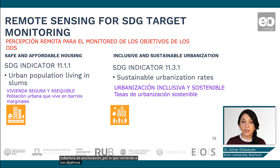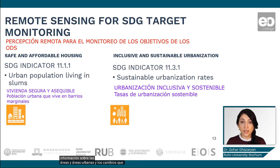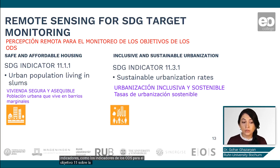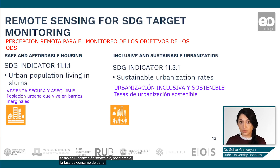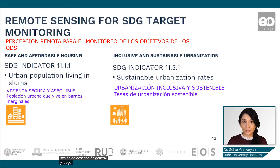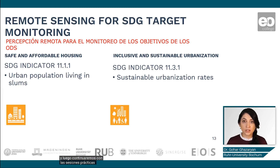Coming back to the sustainable development goals, remote sensing can provide information about urban areas and the changes happening in them. Coupled with other information, it can contribute to monitoring SDG indicators for Goal 11, such as urban population living in slums and sustainable urbanization rates. For example, the land consumption rate can be derived from remote sensing and, coupled with population change data, can be used to assess whether urbanization rates are sustainable. With this, I would like to end the overview session — we will continue with practical sessions covering three user cases.